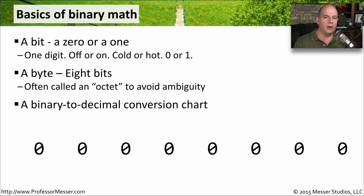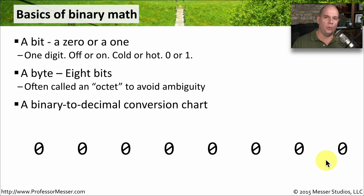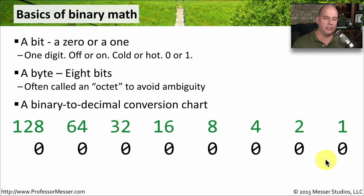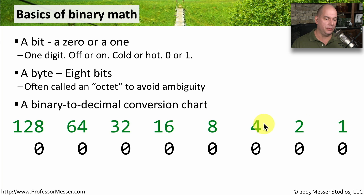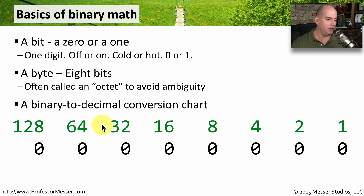To build this chart, let's draw eight zeros on a piece of paper — one through eight. Above that, we're going to perform some easy calculations. On the far right, we put the number one, and then we double that number: one times two is two, two times two is four, four times two is eight. We just keep doubling so that above each zero we have: one, two, four, eight, 16, 32, 64, and 128. That is our binary conversion chart.